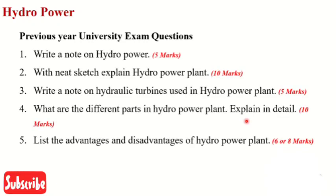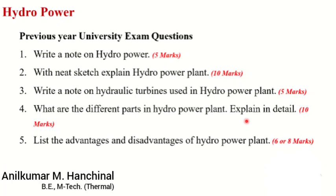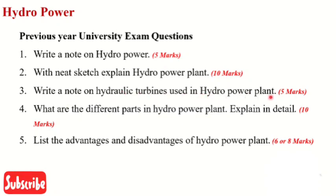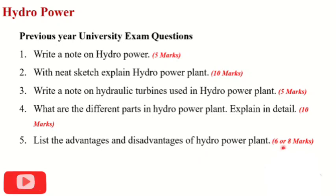Let us see the questions on this topic which were asked in previous university examinations. The first question is: write a note on hydropower, asked for 4 to 5 marks. Second: with a neat sketch, explain the hydropower plant, asked for 10 marks. Third: write a note on hydraulic turbines used in hydropower plants — such as Kaplan and Francis turbines — for 5 marks. Fourth: what are the different parts of a hydropower plant — dam, reservoir, penstock, turbine, transformer, generator, draft tube, tailrace — explain in detail, for 10 marks. Fifth: list the advantages and disadvantages of hydropower plants, for 6 to 8 marks.